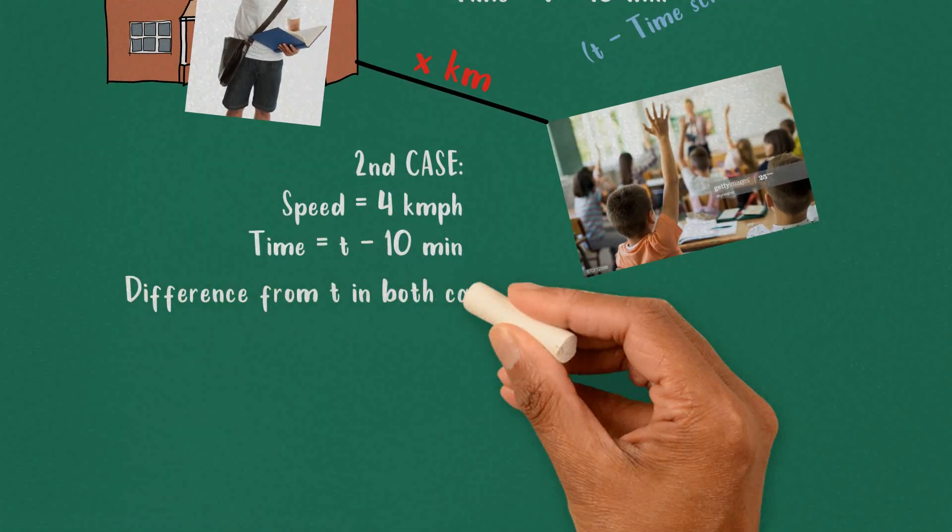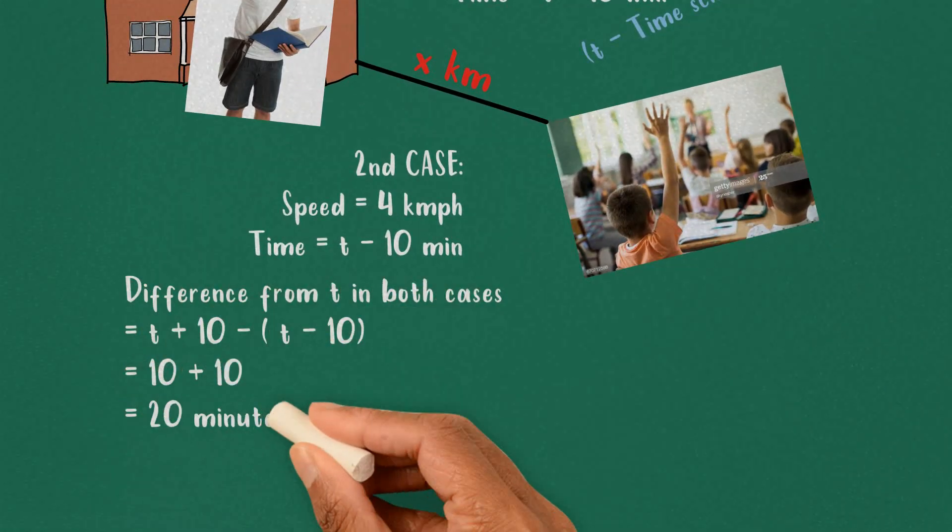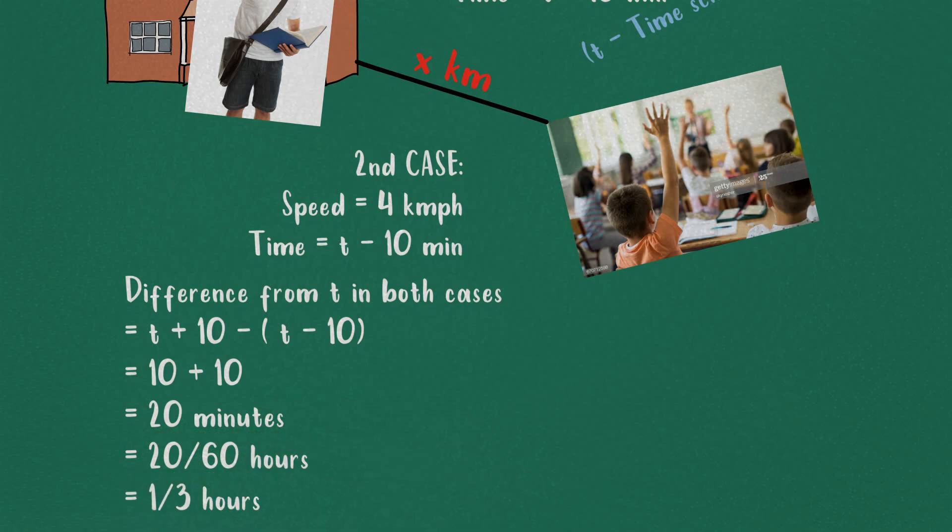We need to find the difference in time he arrives at school each time in terms of t, giving us 20 minutes or 1 by 3 hours.